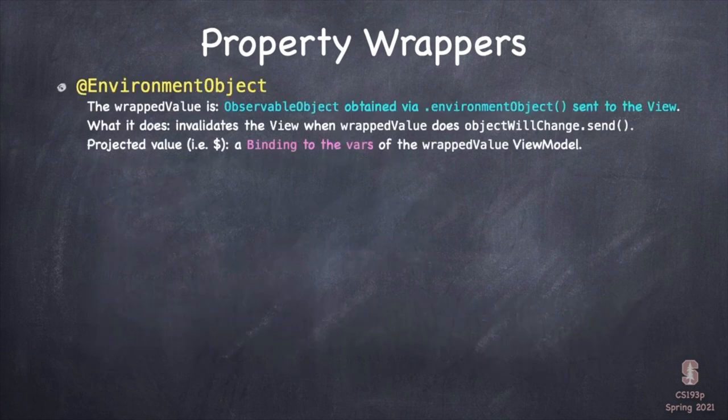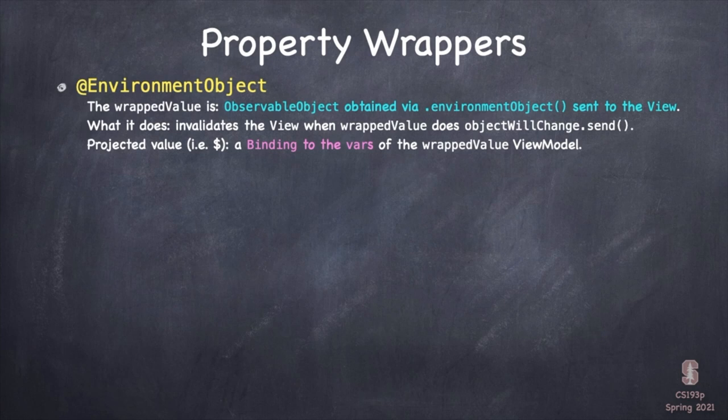@EnvironmentObject's wrapped value is an ObservableObject obtained from .environmentObject being injected. It invalidates the view when the wrapped value calls objectWillChange.send — same as @ObservedObject. Its projected value is also the same: a Binding to the vars of that ViewModel, including subscripting and all that.